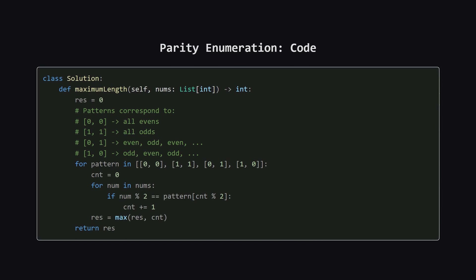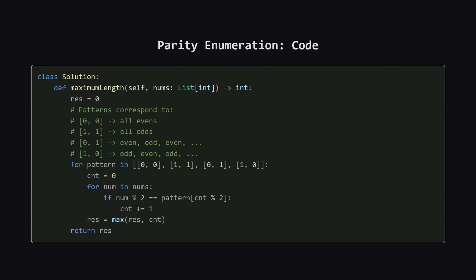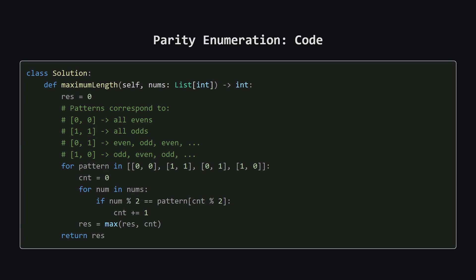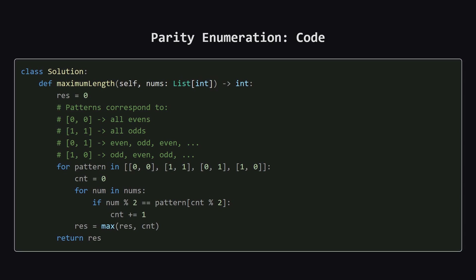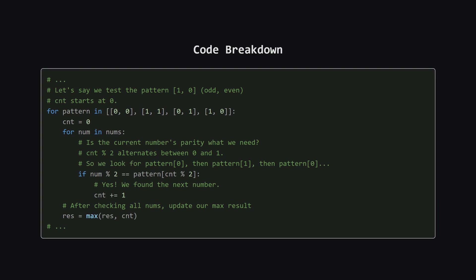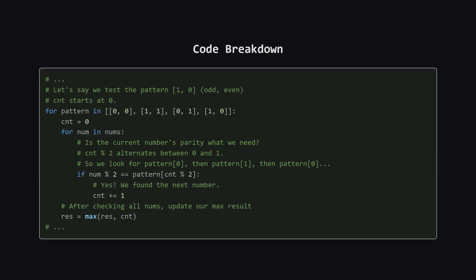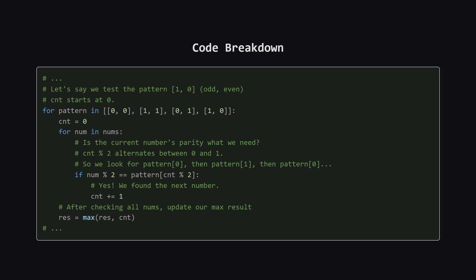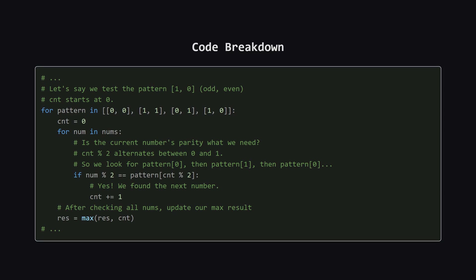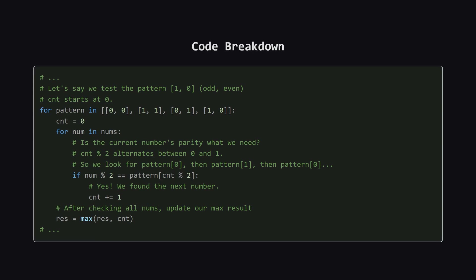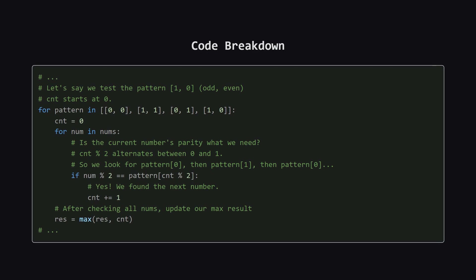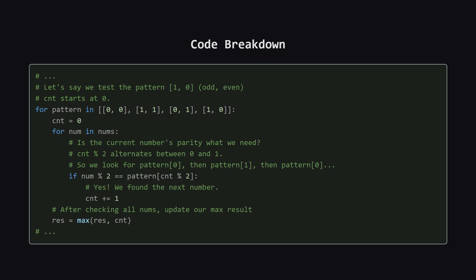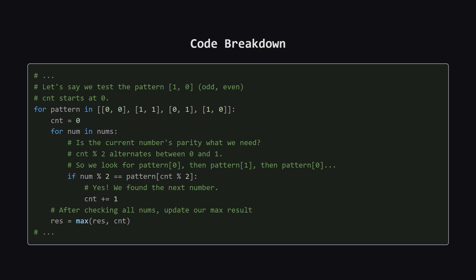Alright, here is the Python code from the solution that implements this idea. It might look a little dense at first, but it's doing exactly what we just discussed. Let's quickly walk through how it works. The outer loop is just testing our four patterns. We use one for odd and zero for even. Inside, the cnt variable keeps track of the length of the subsequence we're currently building for a given pattern. The real magic is this line here — it checks if the current number's parity matches the parity we're looking for at this step in our pattern.